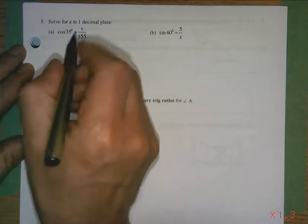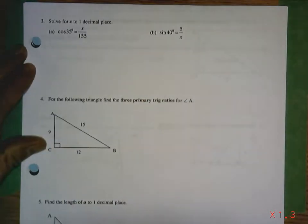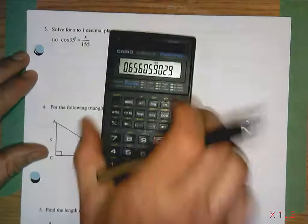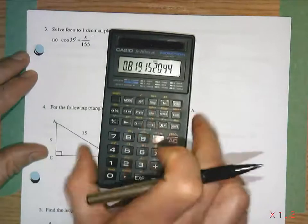So cos of 35 equals x over 155. Well, cos of 35 is simply a decimal. It's a number. Let's remember that.